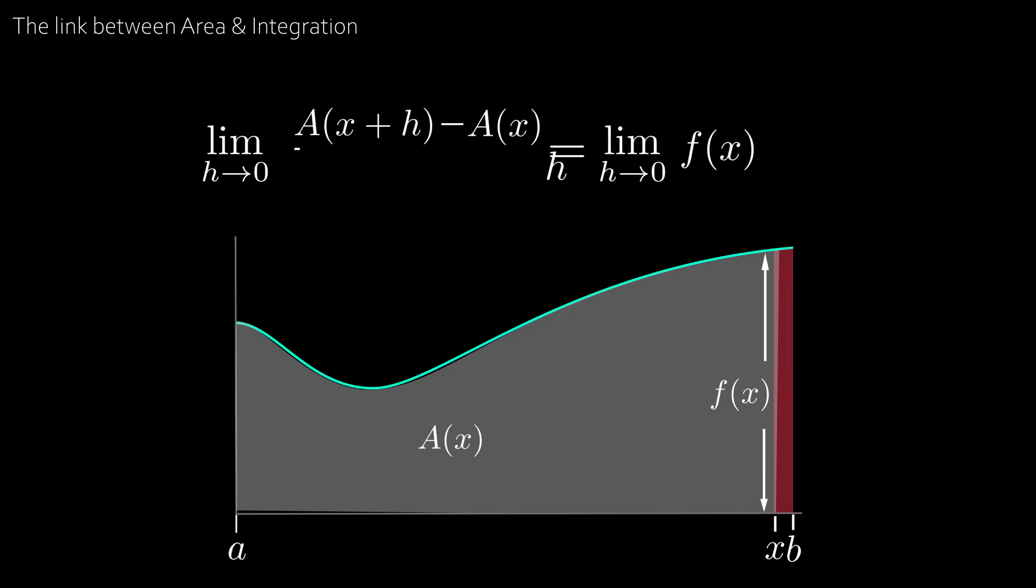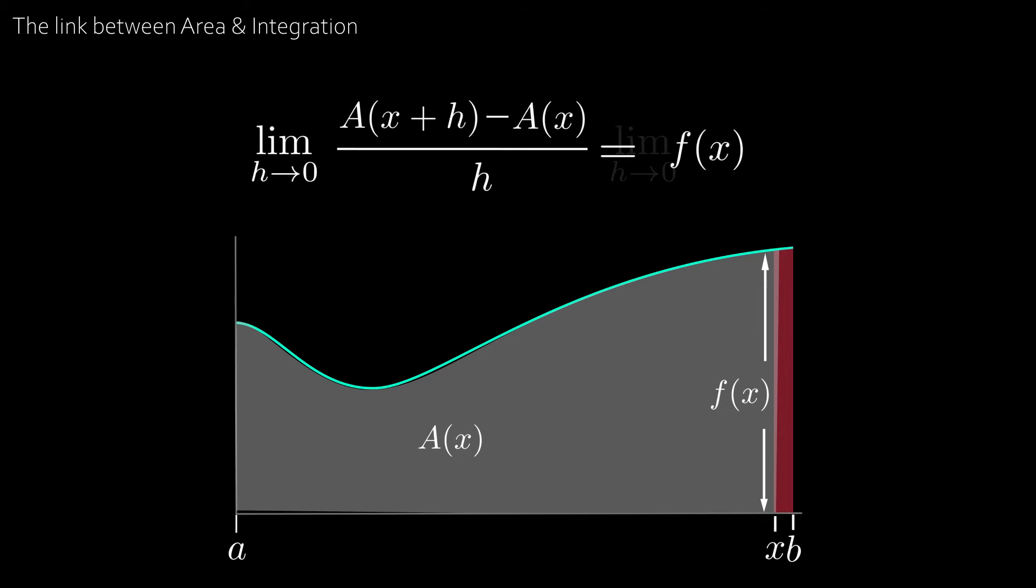Now we can divide by h and since there are no h's on the right hand side we can remove the limit. Now some of you might be able to recognize that the left hand side is the derivative of A with respect to x.